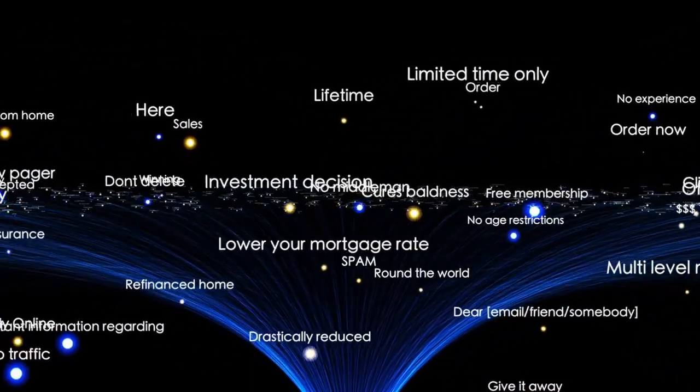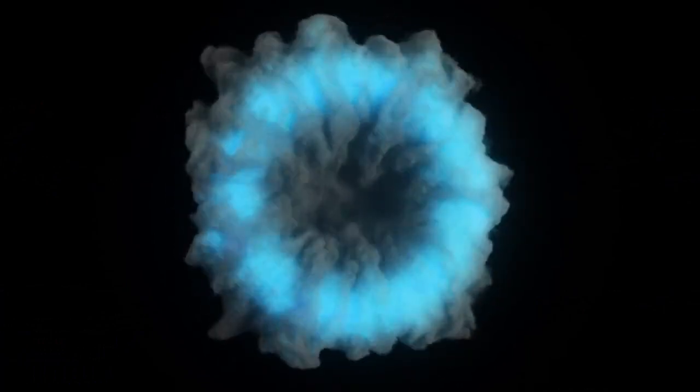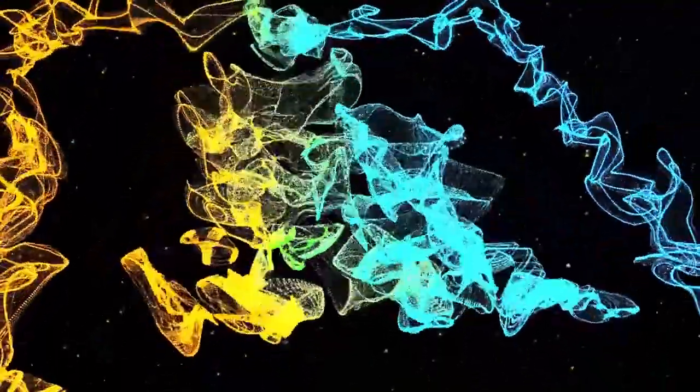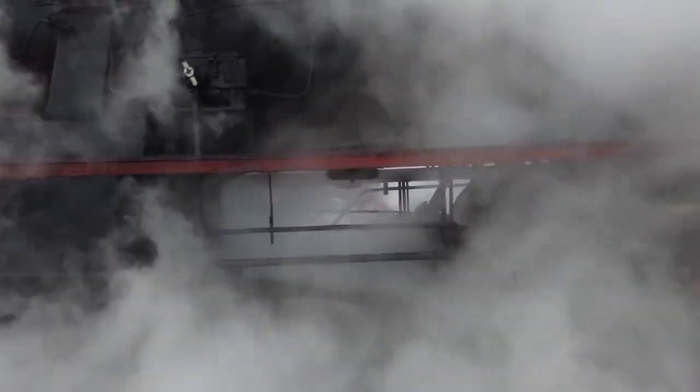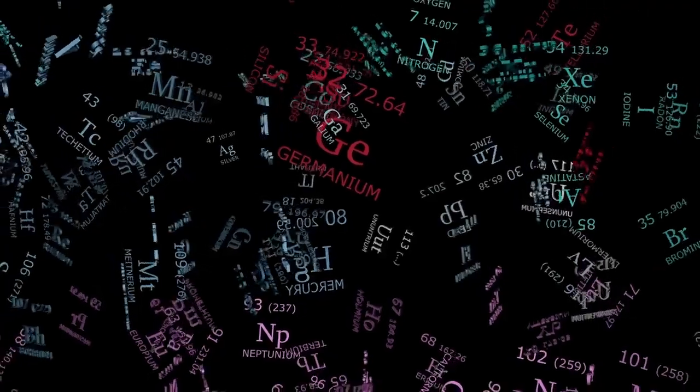It looked like something we'd expect to see billions of years into the universe's history, not just a few hundred million years after the Big Bang. To grasp why this is so baffling, you need to understand how galaxies are supposed to evolve. In the beginning, matter was thin and uneven, slowly pulled together by gravity into clouds that collapsed into stars. Over eons, stars grouped into galaxies. But Webb's images suggested this entire process had already happened far too quickly.